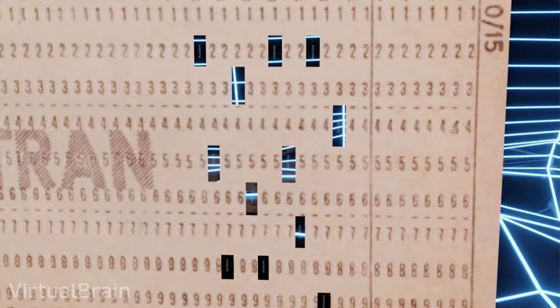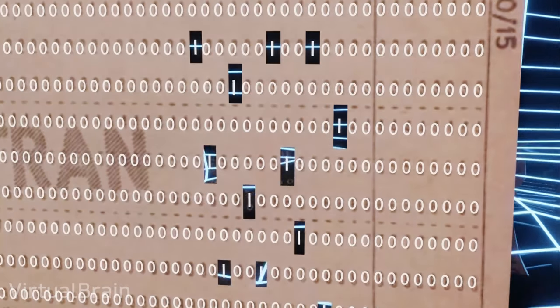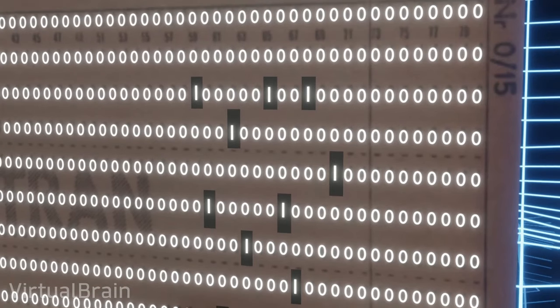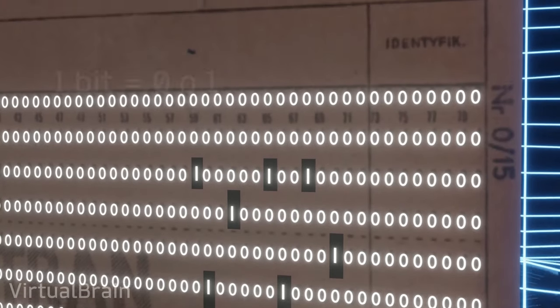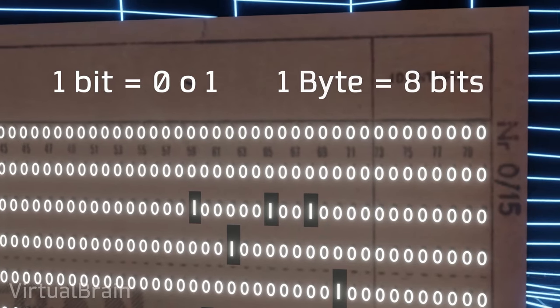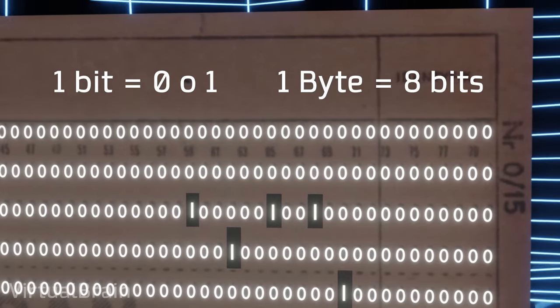In other words, if a computer analyzes these surfaces, a perforation will be interpreted as a 1, and an unperforated section will be interpreted as a 0, which is also known as a bit of information, which should not be confused with a byte of information, more commonly used and equivalent to 8 bits.